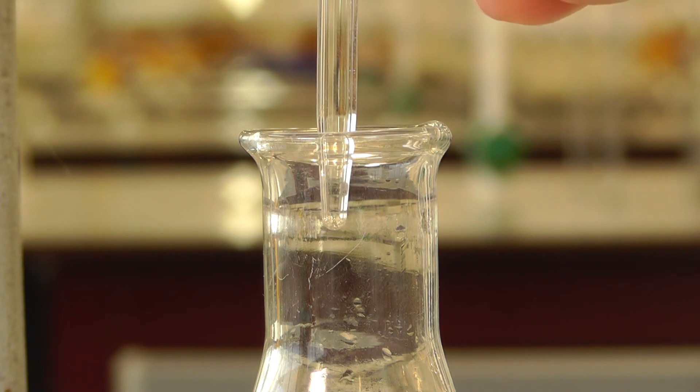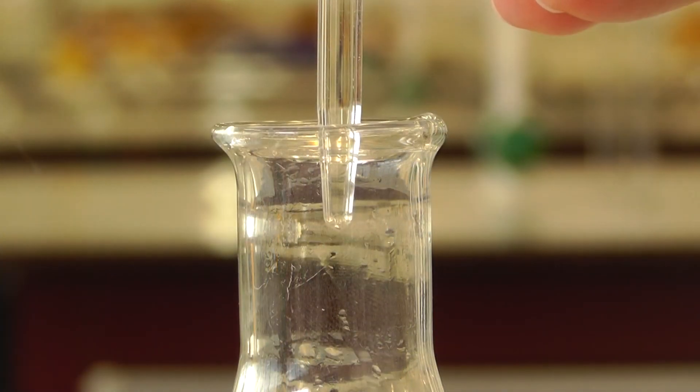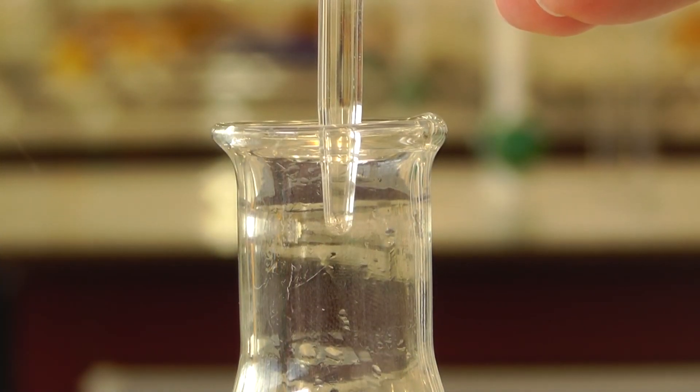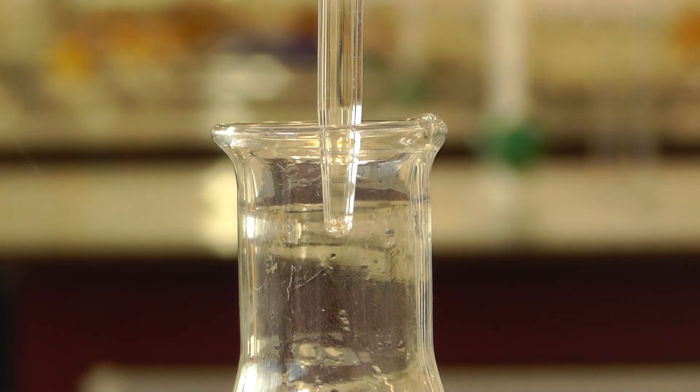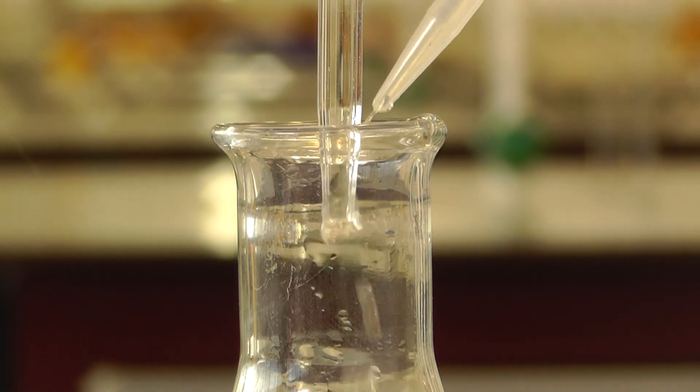Adding solution drop wise is difficult, so be careful when opening the tap. You can also add half drops by closing the tap of the burette while a drop forms on the tip. This half drop should be rinsed into the flask with distilled water.